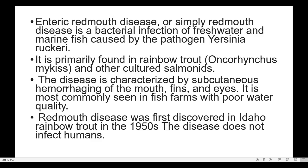The disease is characterized by subcutaneous hemorrhaging of the mouth, fins, and eyes. It is most commonly seen in fish farms with poor water quality. Red Mouth Disease was first discovered in Idaho rainbow trout in the year 1950. The disease does not infect humans.